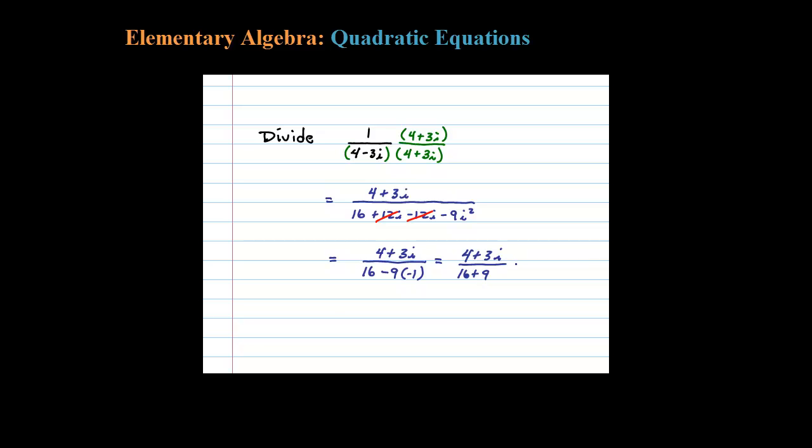Okay, so 4 plus 3i divided by 16 plus 9. Notice, no more imaginary unit in the denominator. That's the goal.